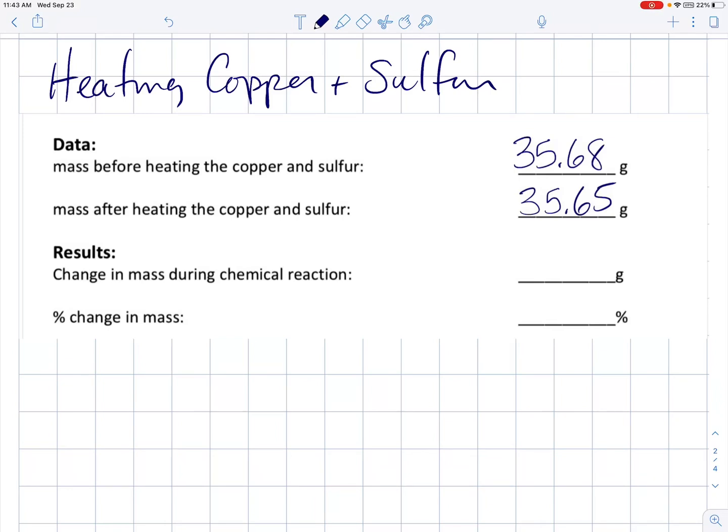All right, in this video we're going to look at sample data for an experiment in grade 9 advanced science. We were doing the heating of copper and sulfur and we were trying to discover whether mass would change during a chemical change.